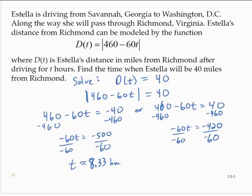And 420 over 60, t is equal to 7. So Estella is 40 miles from Richmond after 7 hours and 8.33 hours of driving.